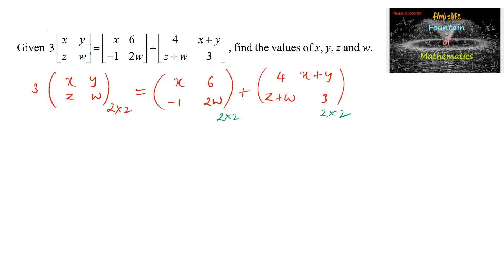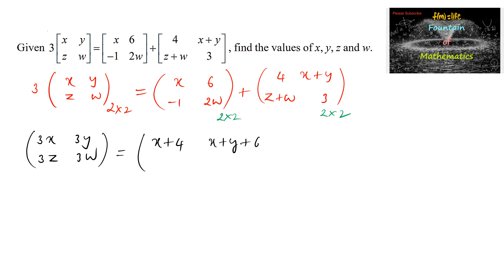We perform scalar multiplication on the left side: 3x, 3y, 3z, and 3w. Simplifying the right side gives: x+4, x+y+6, z+w-1, and 2w+3. Since both sides are 2 by 2 matrices of the same order, their corresponding elements must be equal.